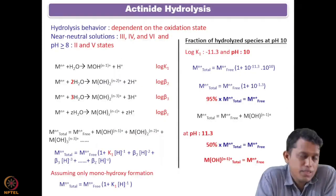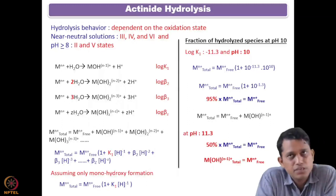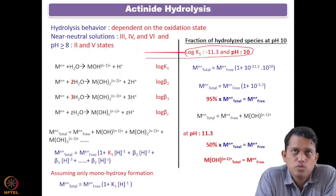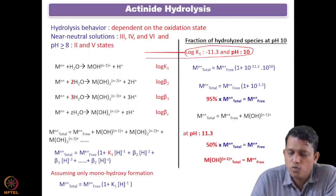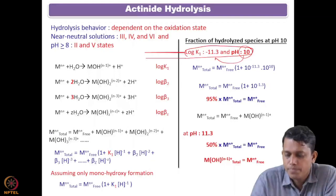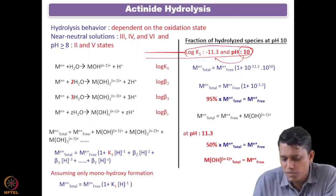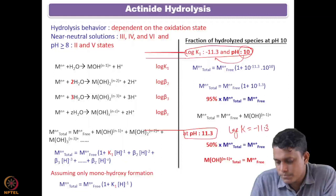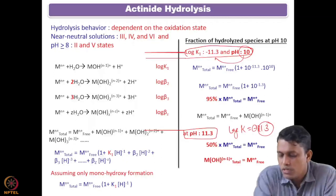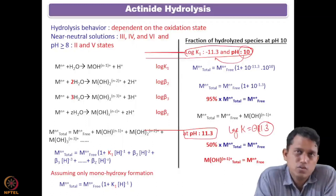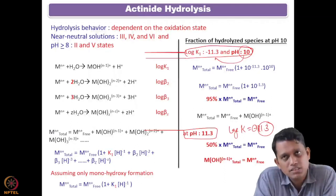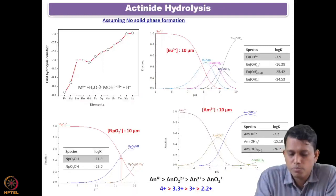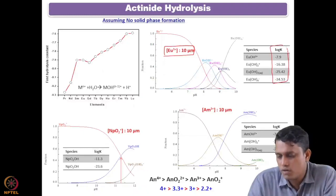We have also seen how to get the composition or percentage of hydroxy species at a given pH if the log K values are known. Taking an example with a log K value assuming only a monohydroxy complex: if your pH is almost one unit lower than the log K value, 95% is present as free metal ion. But when your pH is close to the log K value — say log K of minus 11.3 — more than 50% of the total metal ion is free and about 50% is hydrolyzed.